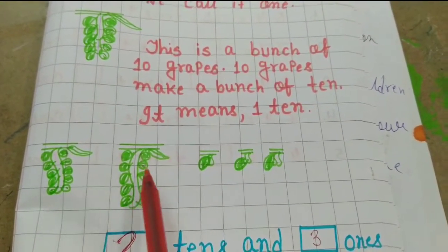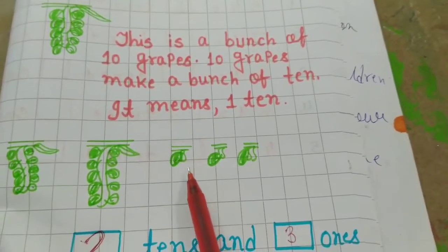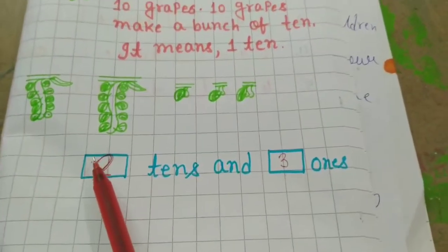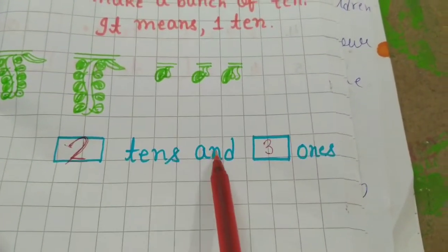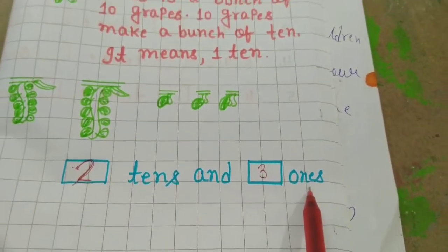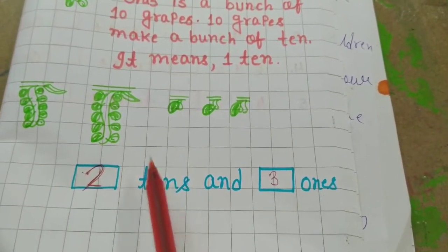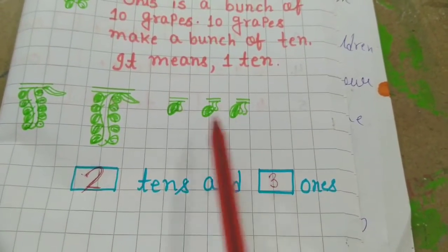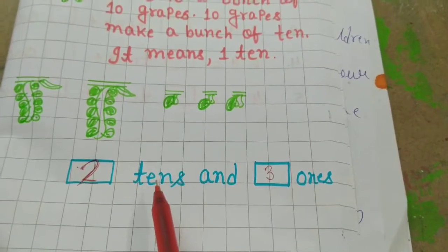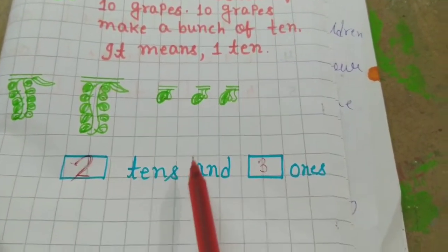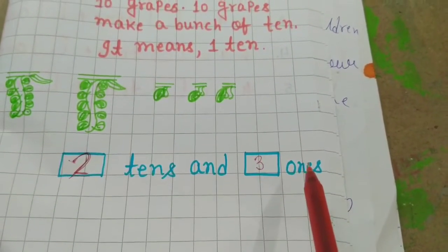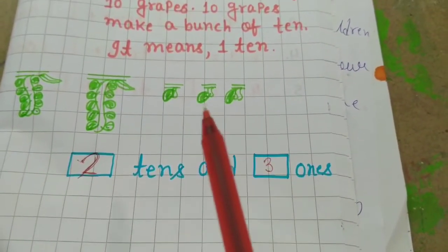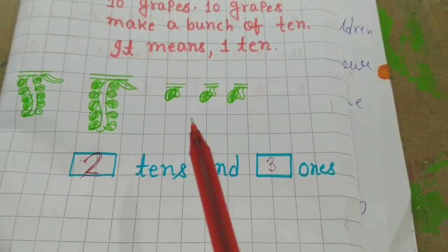That means here 20 graphs are there and here 1, 2 and 3, that means 2 tens and 3 ones. 2 tens means 20 and 3 ones. Here also you can see easily the place value of individual digit.